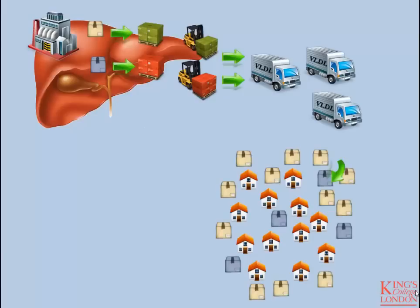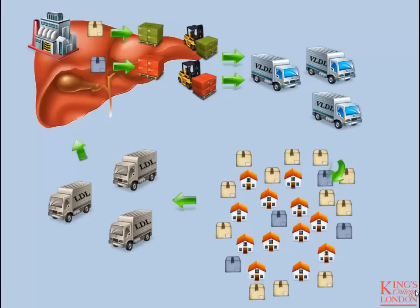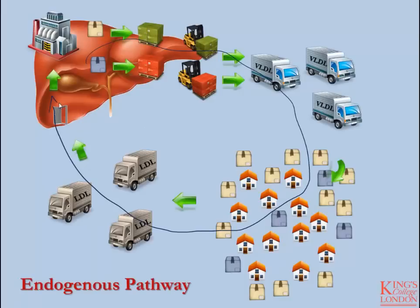Once the triglyceride and some of the cholesterol has been adequately distributed through the tissues, these very low density lipoprotein particles have transitioned to LDL particles, which are very poor in triglyceride content but high in cholesterol. Ideally these LDL particles are then removed from circulation by the liver, the constituent parts are repackaged, and the cycle occurs again. This describes the endogenous pathway of lipid transport.